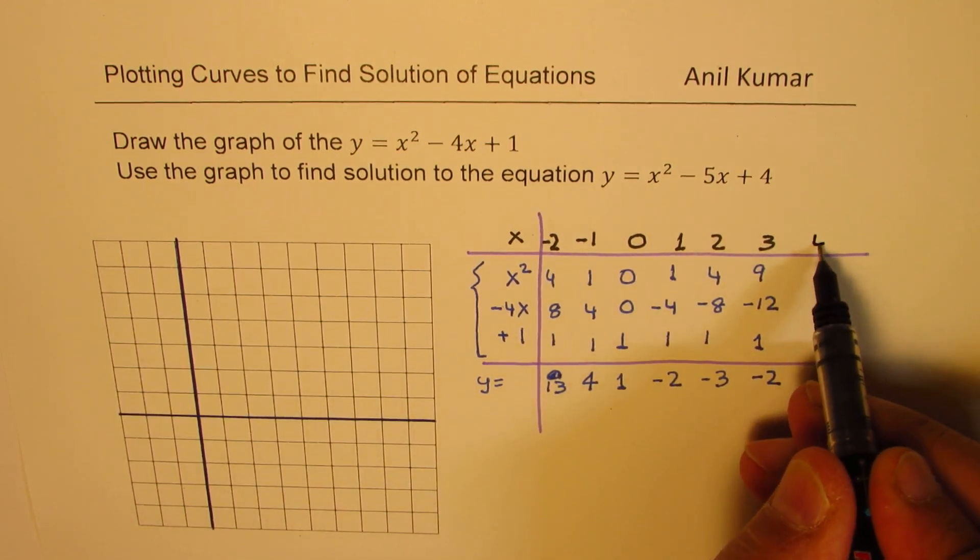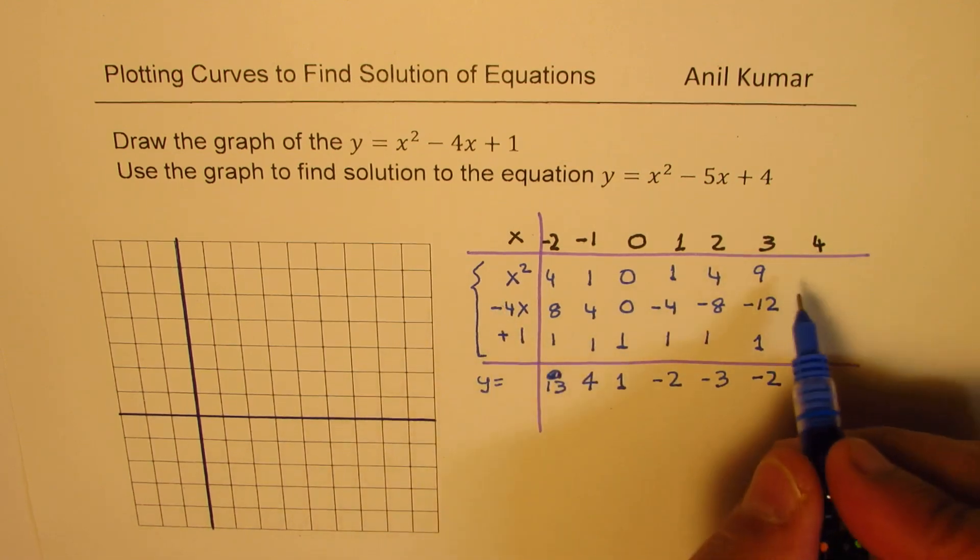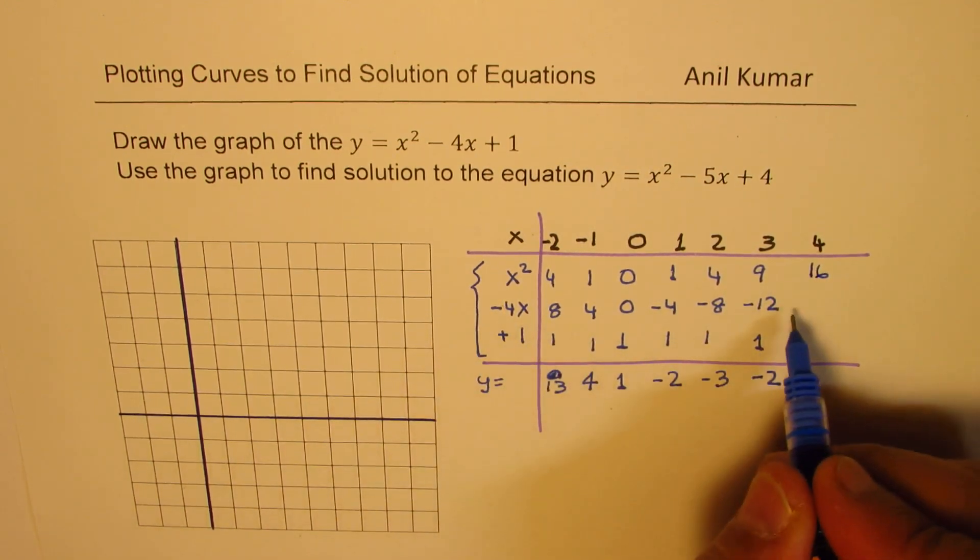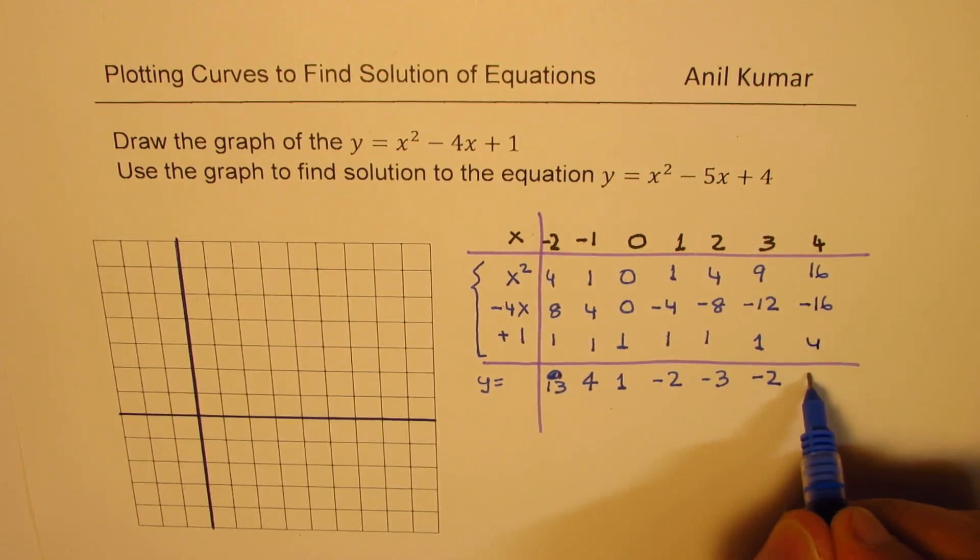Let's also try one more value which is 4. So 4 squared is 16, minus 4 will be also 16 with negative sign, and plus 1. So now we get a positive value of 1.